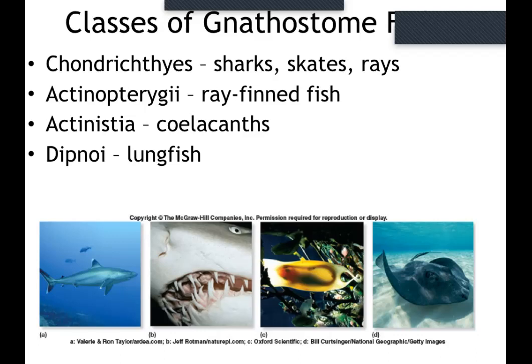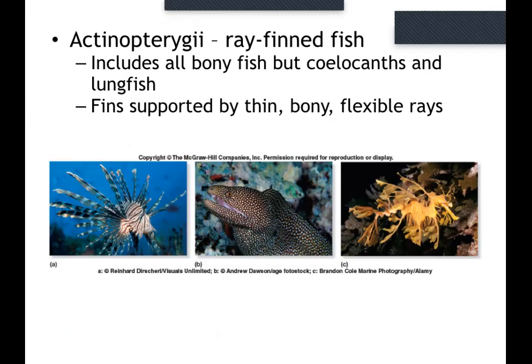Then you start seeing more ray-finned fish, and then coelacanths and lung fish — fish that can breathe air. This is some of the reasoning why we think fish that could hobble onto land and breathe, like mud-lung fish, may have been the first animals to move to land and then become amphibians, then reptiles, then mammals. Bony fish — not sharks and rays — have swim bladders that allow them to float up and down in the water column. The idea is that the swim bladder and lung fish structures may have evolved to become lungs.